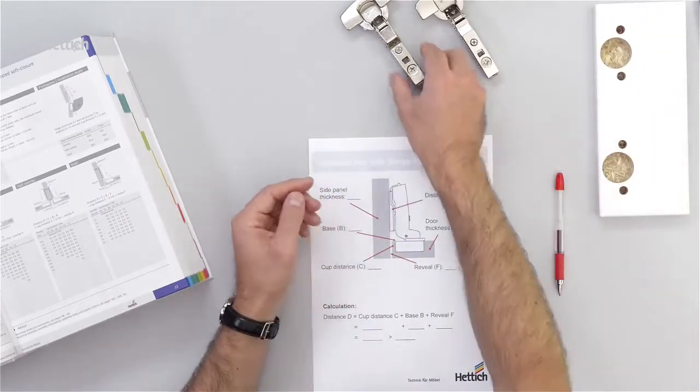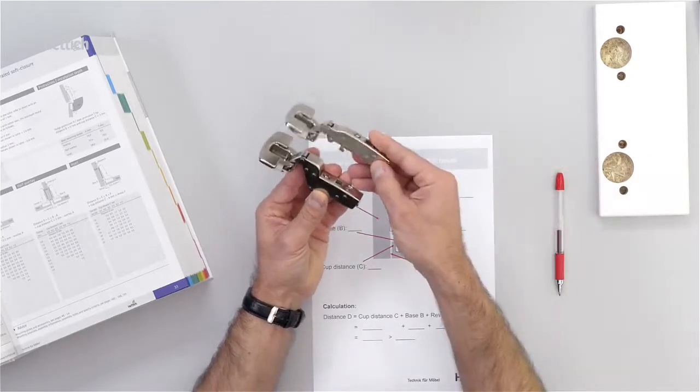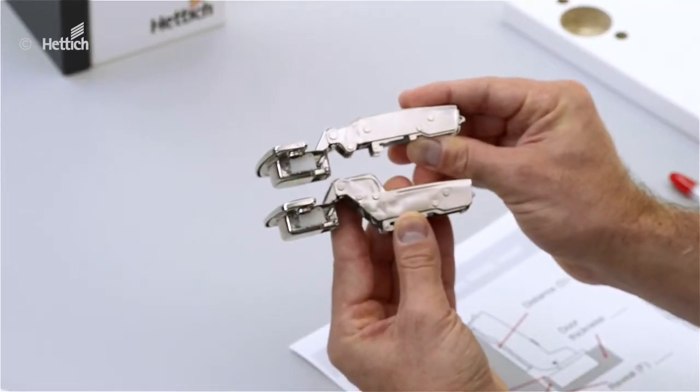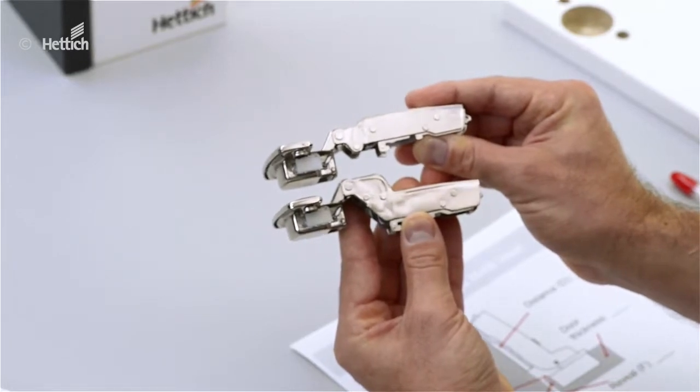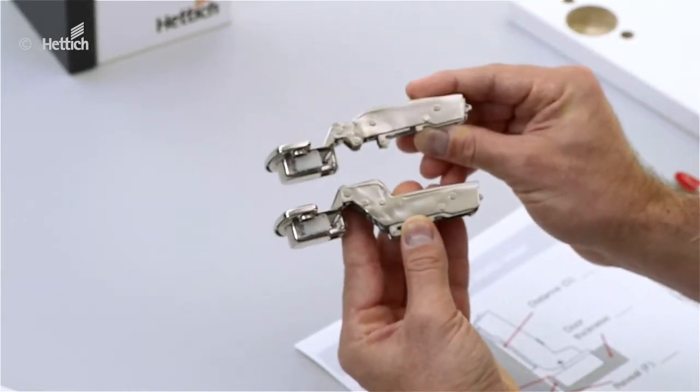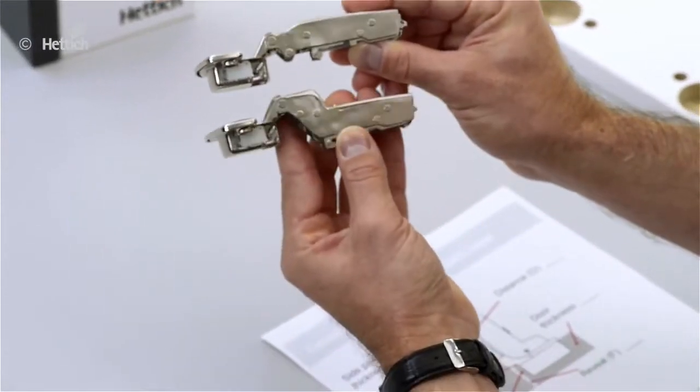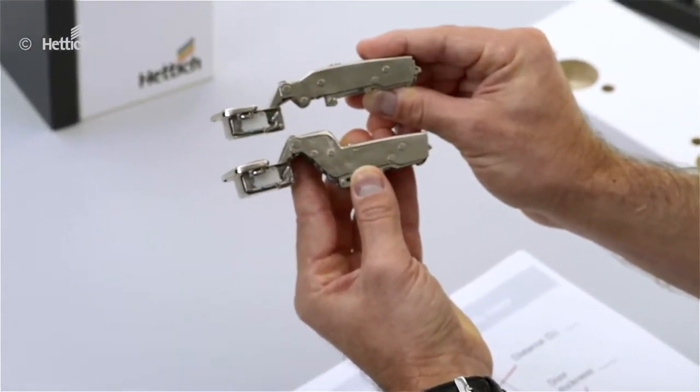And also the base B, which is the value for the different shape of the hinge arm. You can see here a full overlay hinge and an inset hinge with a clear difference.